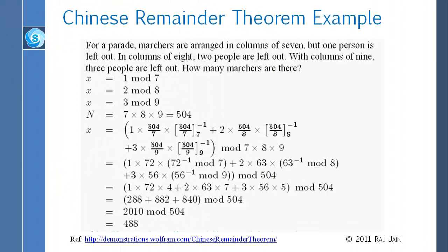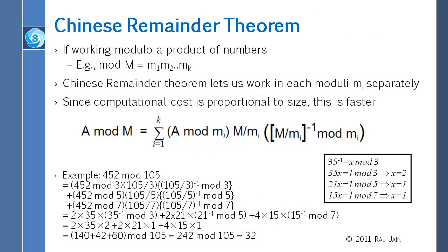Here is an interesting problem. For a parade, marchers are arranged in columns of 7 but one person is left out. If we arrange them in columns of 8, two people are left out. If we arrange them in columns of 9, three people are left out. So how many marchers are there? This is actually an application of Chinese Remainder Theorem because we know x is congruent to 1 mod 7, also 2 mod 8, and also 3 mod 9. We don't know x but we are given the modular values, so the question is: what is x?